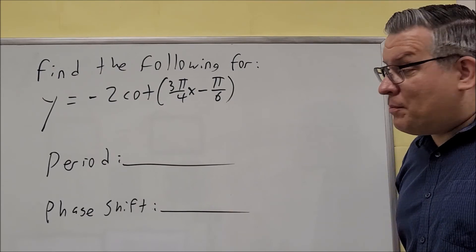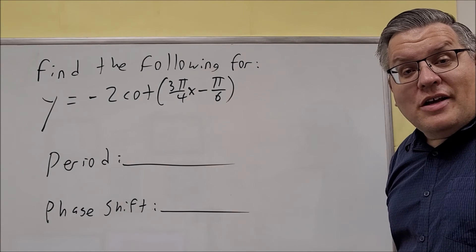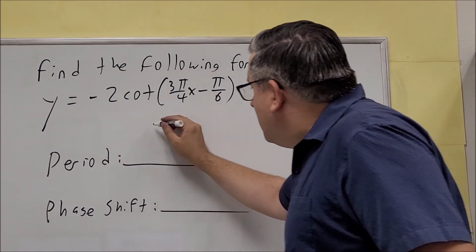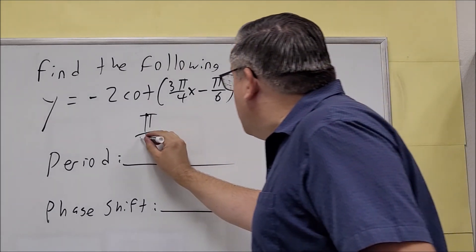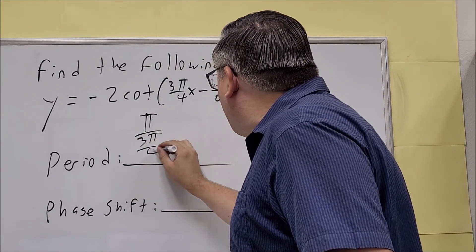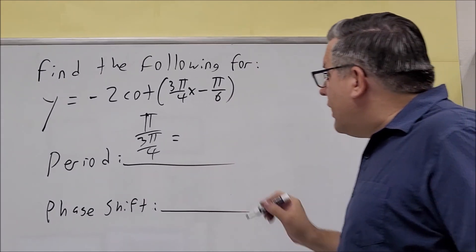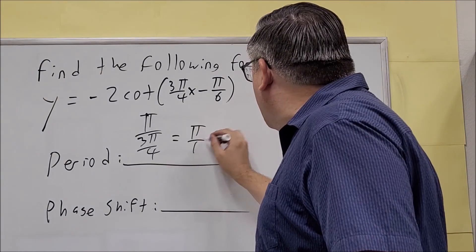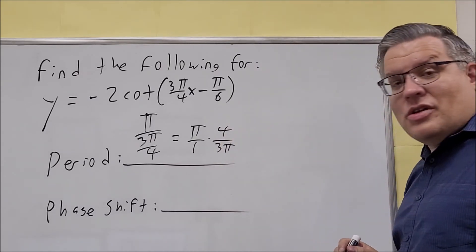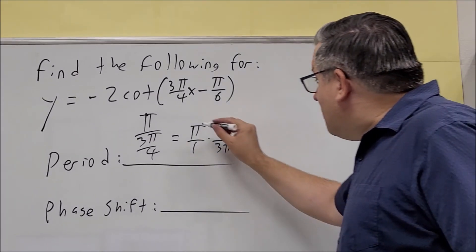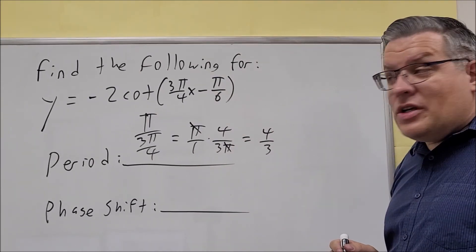For our next problem, we want to find the period and the phase shift for this here. The period is π over b. It's going to be π divided by the number in front of the x. So we're going to do π divided by 3π over 4, and so then you're going to flip and multiply. So you're going to do π over 1 times 4 over 3π like this. That's going to allow you to cancel out the π's here, and you're going to get 4 thirds as the answer.